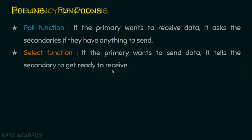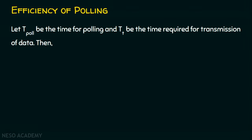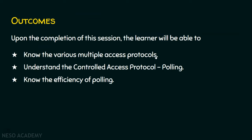We will now see the efficiency of this technique. There are two delays associated with polling: transmission time, since every node wants to transmit; and polling time, since the master node has to choose each node and notify it that it's their turn to send data, in a cyclic manner. Let t-poll be the time for the polling, and tt be the time required for transmission of data. Therefore, the efficiency of polling technique is tt divided by (tt plus t-poll). I hope now you know the various multiple access protocols, understand the controlled access protocol that is the polling technique, and know the efficiency of polling. Thank you for watching.